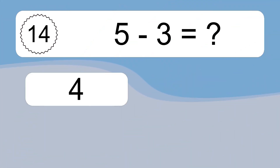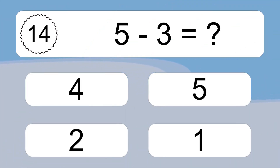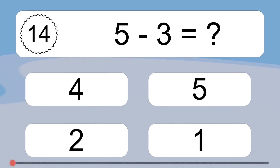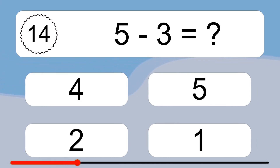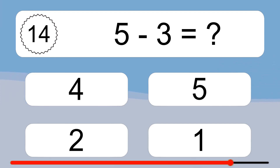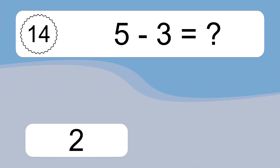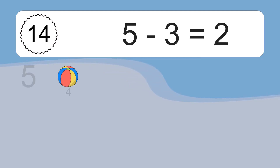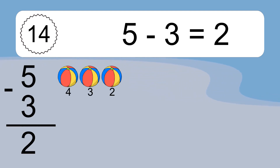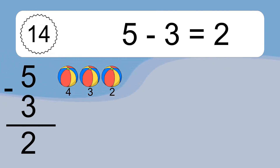5 minus 3 equals what? 5 minus 3 equals 2. Let's count it. 4, 3, 2.